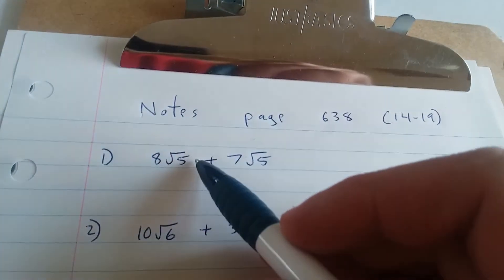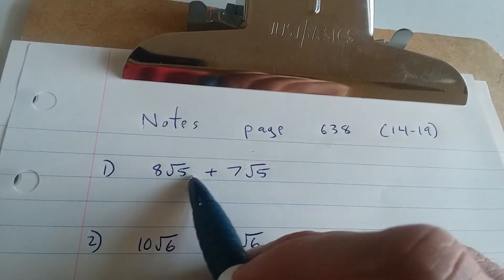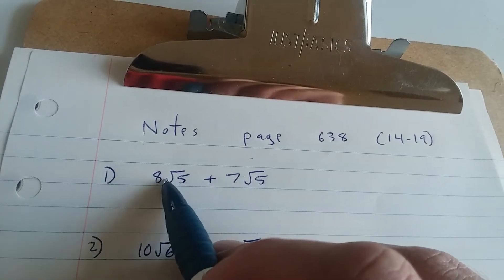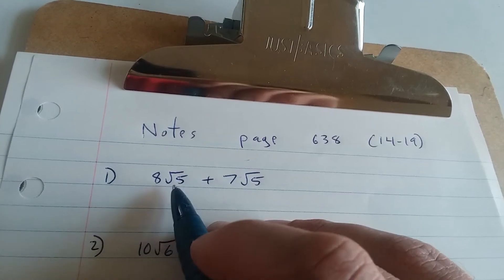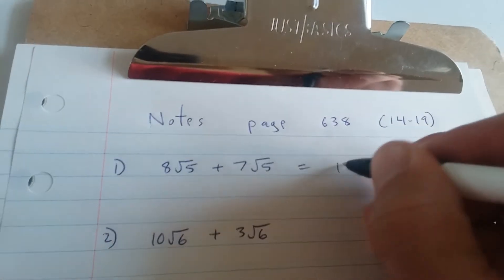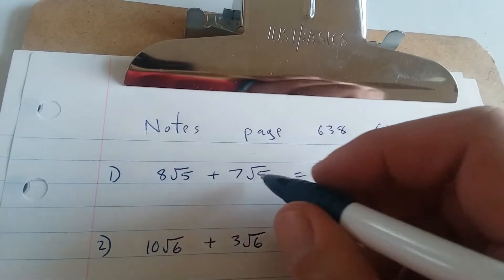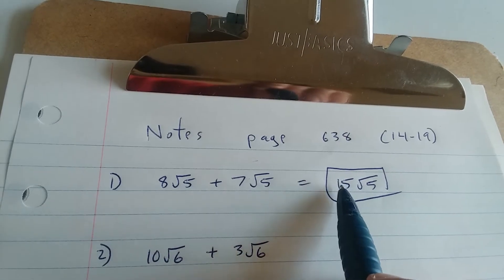Example 1 here, we have 8 square root of 5 plus 7 square root of 5. Notice that the number under the root matches, so we can pretend this is 8x plus 7x, and then you would add the coefficients 8 and 7 to get 15x, which would be the same thing as 15 times the square root of 5. What's under the root does not get added, it's just the number in front. We added 8 and 7 to get the 15.